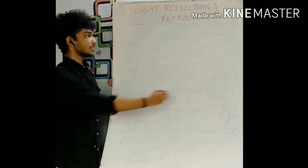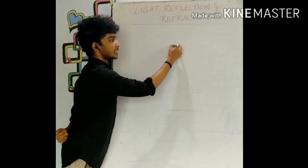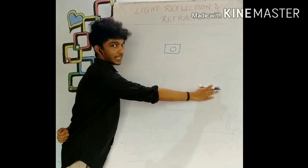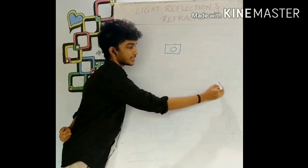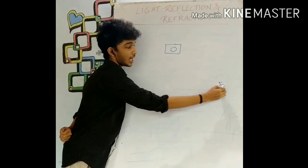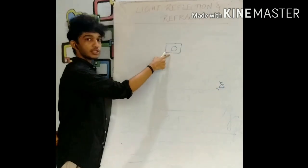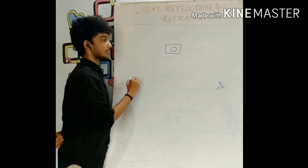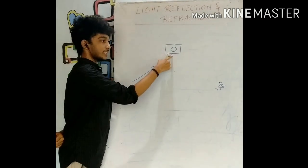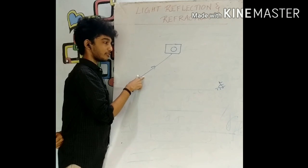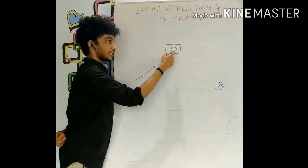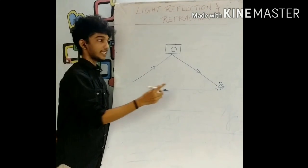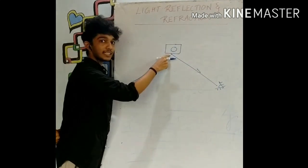Suppose we imagine that an object O is placed over here, and let I be standing over here — let this denote my eye. How will my eye be able to visualize this object? When a ray of light strikes the object, this ray of light gets reflected and it reaches my eye. It is in this way that my eye is able to visualize this object.